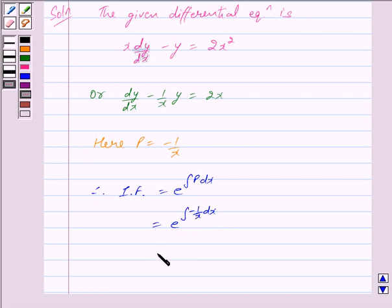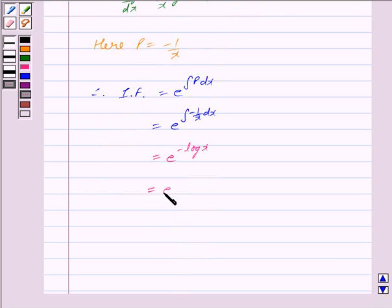This is equal to e^(-log x), since the integral of -1/x with respect to x is -log x. So, we get e^(-log x) = e^(log(1/x)) = 1/x.